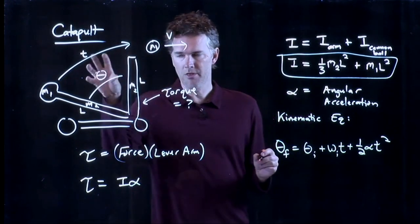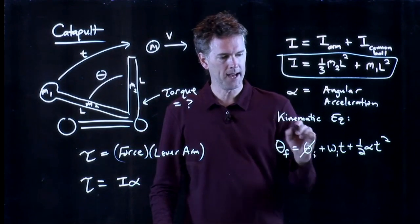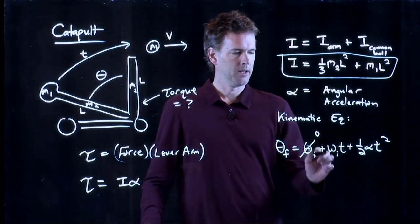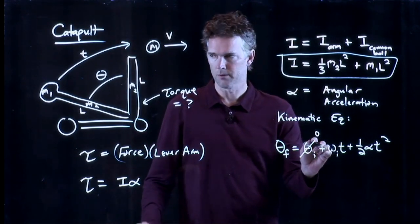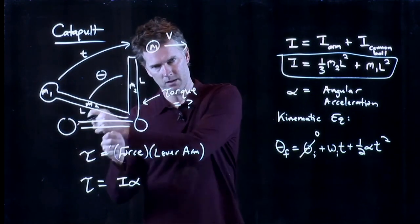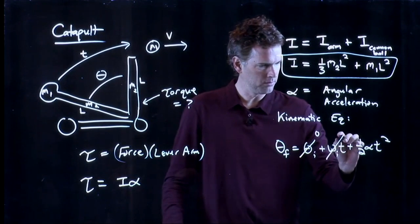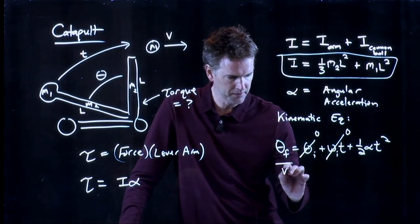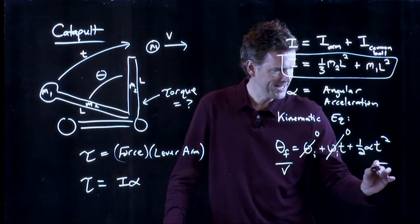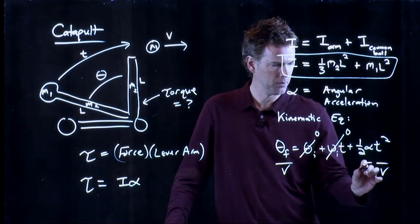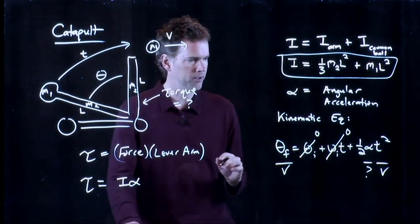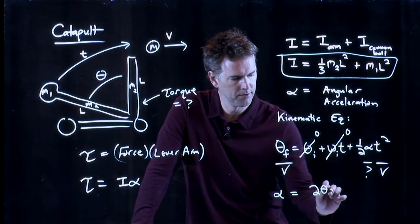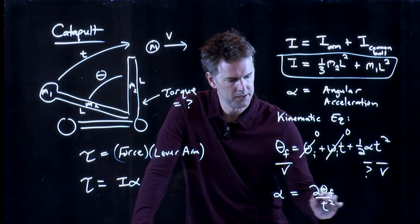What I'm thinking of is this. Theta F equals theta I plus omega initial times T plus one half alpha T squared. Theta, we can call theta F zero arbitrarily. And then our theta final is how far that thing rotated. It also started from rest. This whole thing is tied down with a rope. They cut the rope and boom, it goes. So omega initial is equal to zero. And now we know this. This is something they would give you in the problem. We know T. That's something they would give you in the problem. So we can solve this equation for alpha. What do we get? We get alpha equals two theta F divided by T squared.